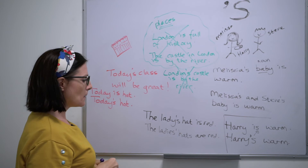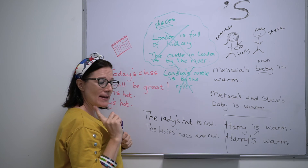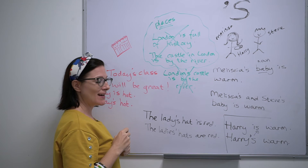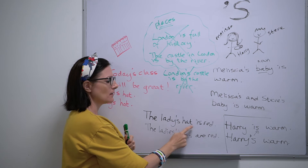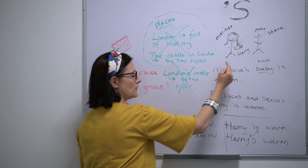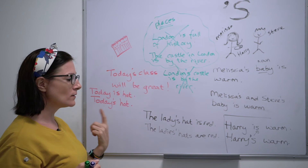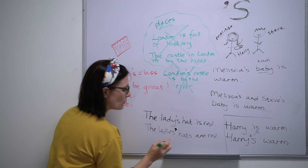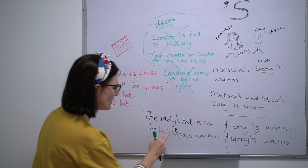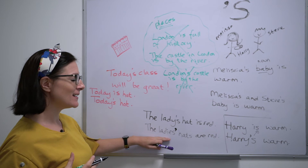We use the apostrophe S for people and for time. If the word ends in the letter S, you only put the apostrophe — you do not put two letter S's. For example, 'the lady's hat is red' — one lady, the hat of the lady. However, the word 'ladies,' when it is plural, ends in the letter S. Consequently, we only put the apostrophe; we do not put an extra S. This is applicable for any word that ends in an S.